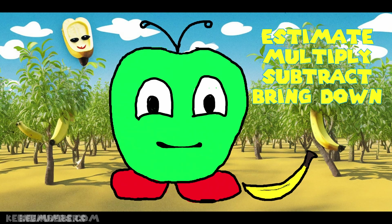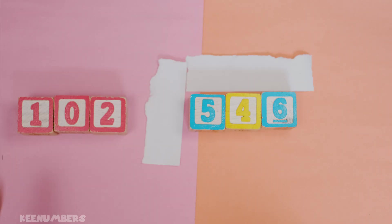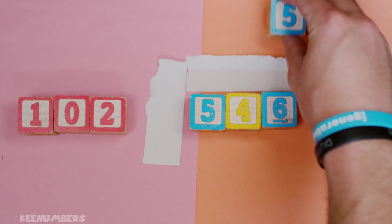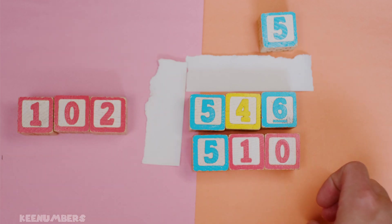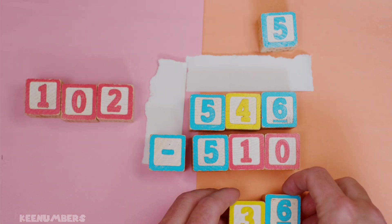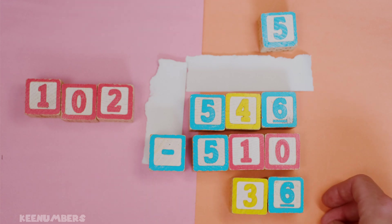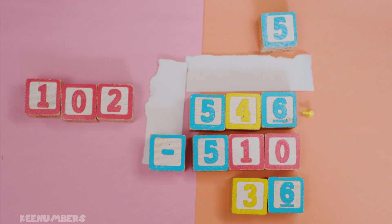Step one: estimate. Step two: multiply. So 102 goes into 546 five times. There are going to be five hundreds and ten left over, so you do your subtraction. You'll be left with 36. Now remember, this decimal was here, so the key is to line up your decimals when you do this kind of long division.